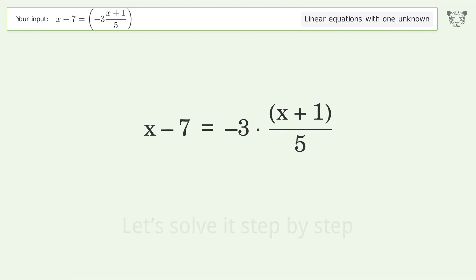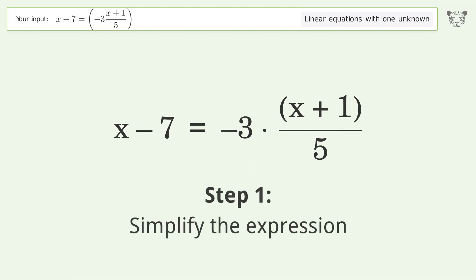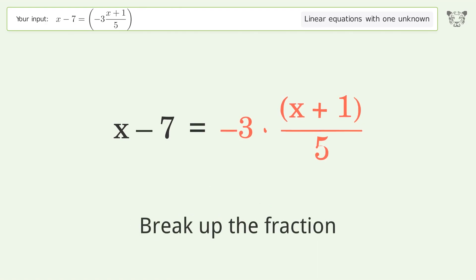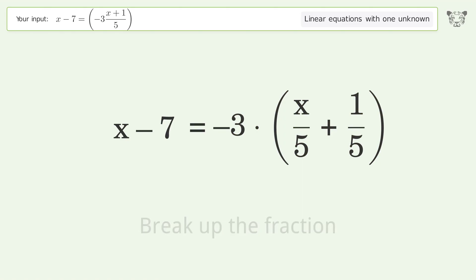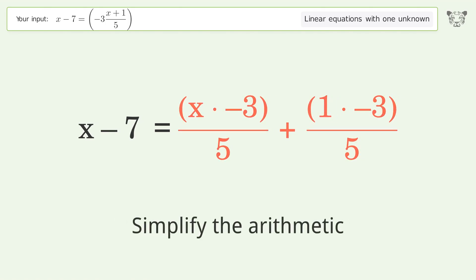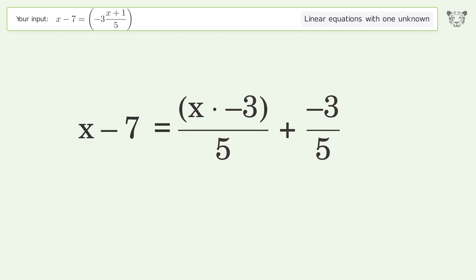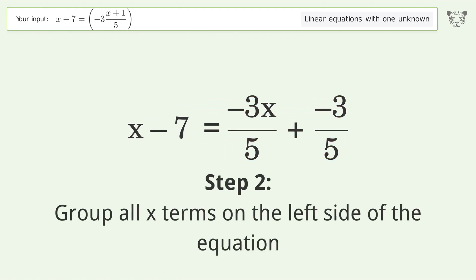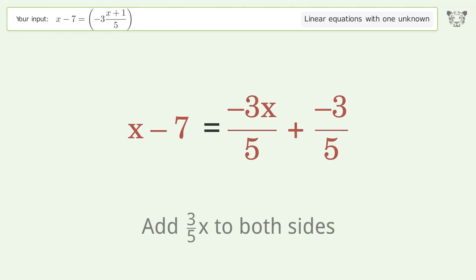Let's solve it step by step. Simplify the expression, break up the fraction, expand the parentheses, simplify the arithmetic. Group all x terms on the left side of the equation. Add 3 over 5x to both sides.